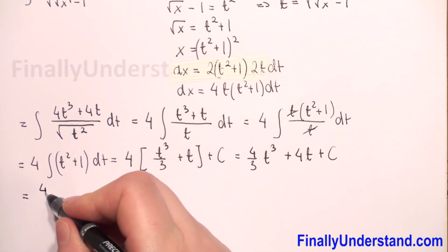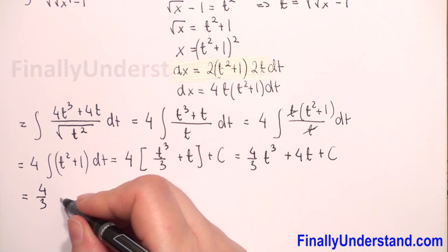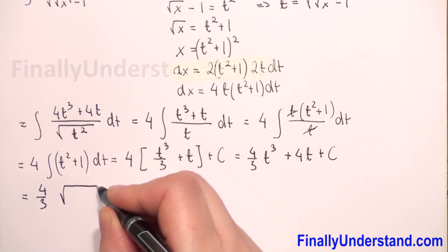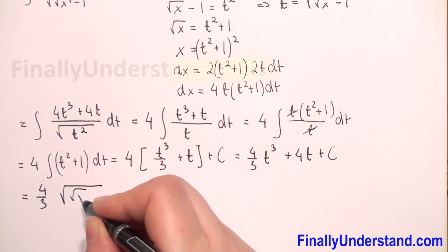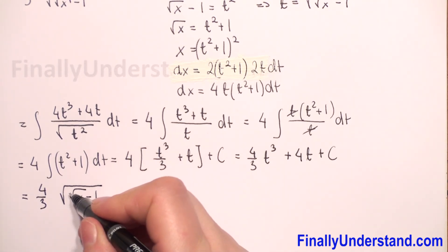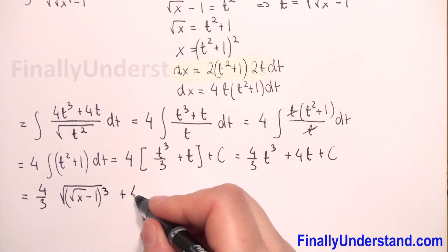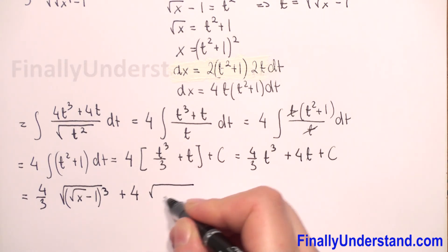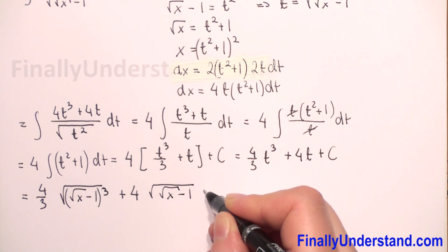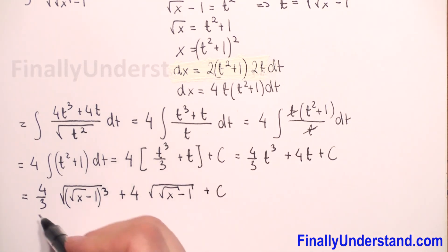It will be 4 over 3 times the square root of the square root of x minus 1, raised to the third power, plus 4 times the square root of the square root of x minus 1, plus constant c. This is the solution.